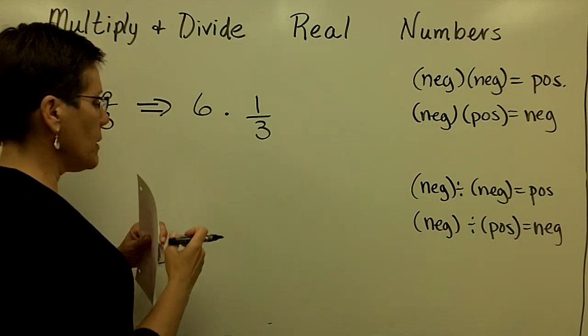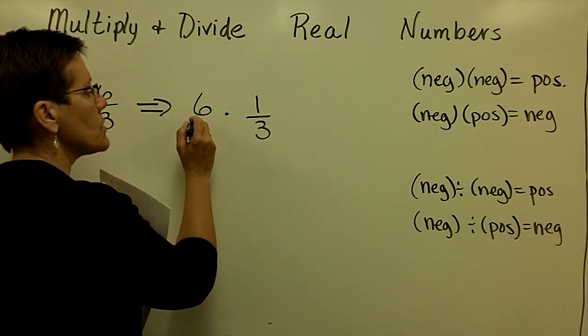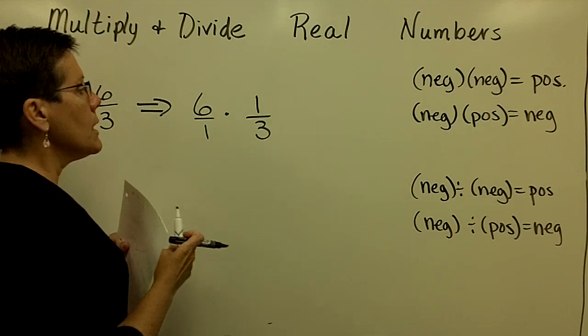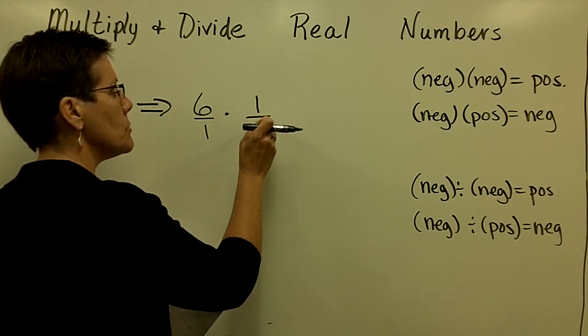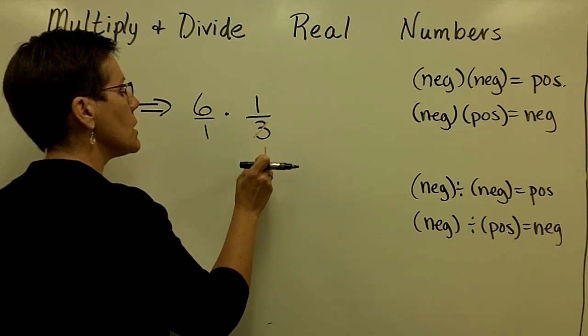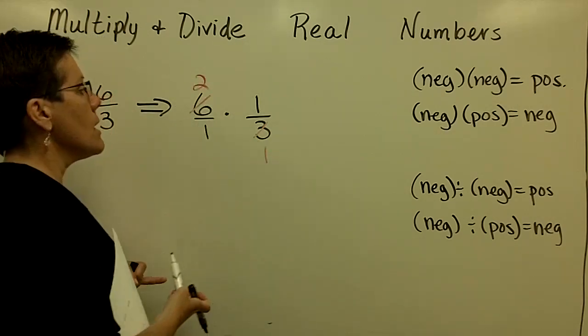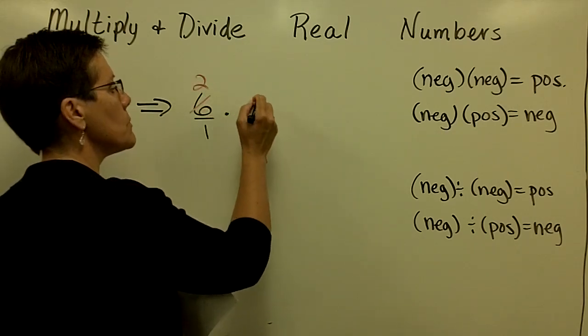6 times 1 third, this number 6 can be put over a 1, is the same thing as reducing. This 3 goes into here once and into here twice, and I have finally an answer of 2 times 1 in the numerator.